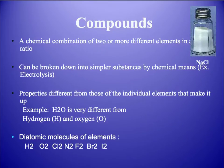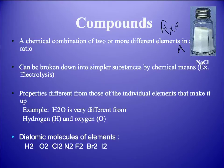The second type of pure substance is compounds. Compounds are a chemical combination of two or more different elements in a fixed ratio. Compounds can be broken down into simpler substances, but only by chemical means — for example, through electrolysis or a chemical reaction.